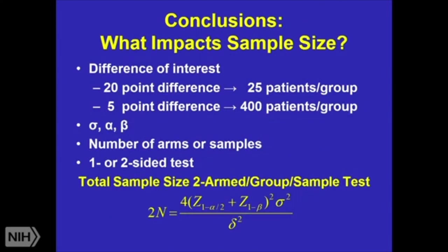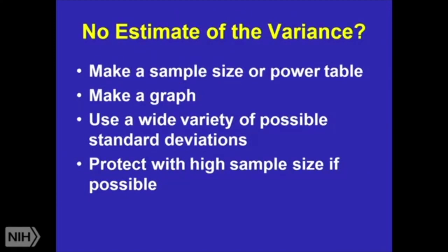So what are some of our resources and conclusions? What impacts your sample size? The differences, the standard deviations or variance, your type 1 error, your type 2 error, number of arms or samples, one- or two-sided tests, are you randomizing and what type of randomization, and what are the analysis plans? If you don't have an estimate of the variance, make sample size or power tables and graphs. Even when you think you have good estimates, they may not be that good — always make tables and graphs, show a wide variety of possible standard deviations and differences, and protect yourself with a high sample size if at all possible.